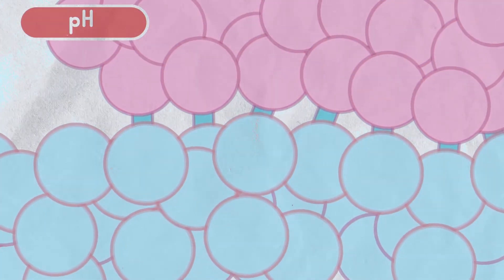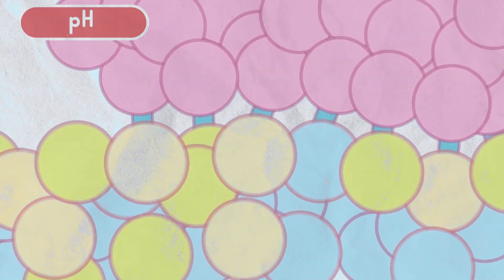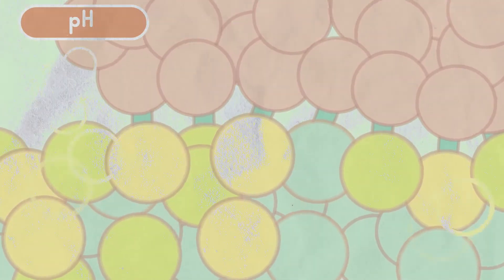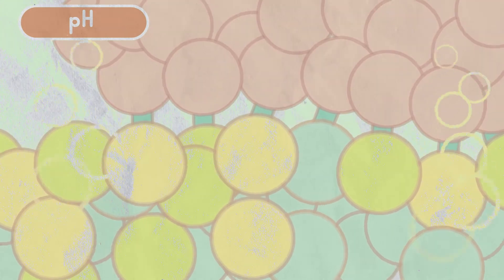pH. Amino acids present in the active site are ionizable. Fluctuation in pH can affect these amino acids, making it hard for substrate to bind. Extreme pH values can denature enzymes.